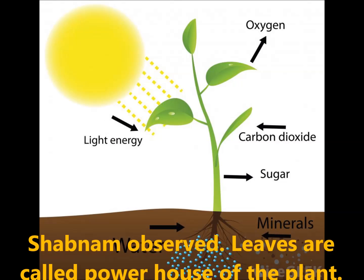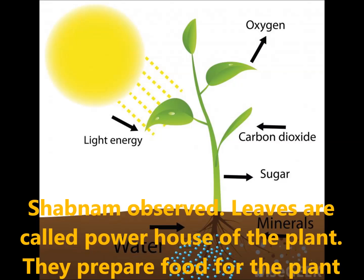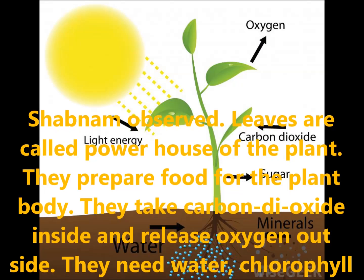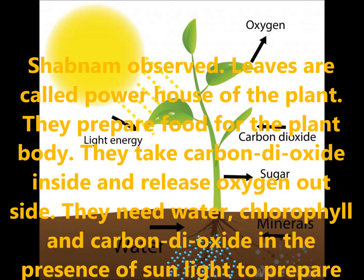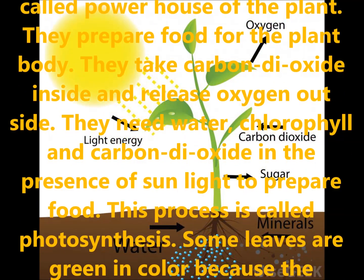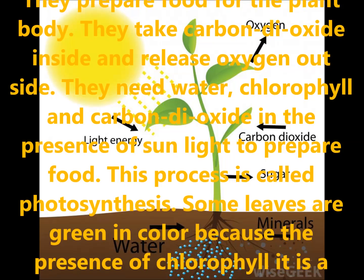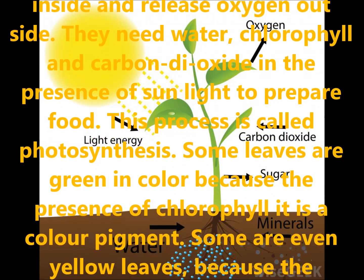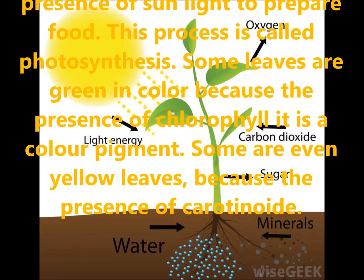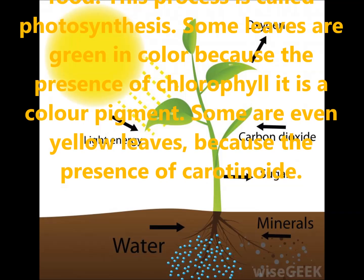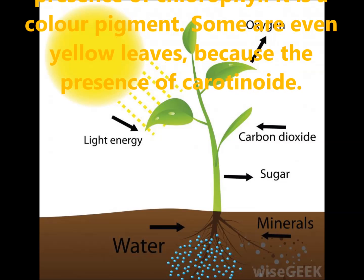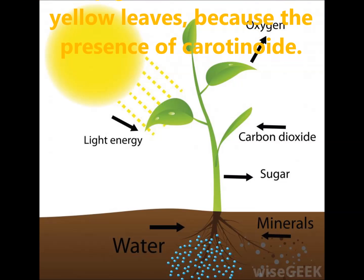Shabana observed that leaves are called the powerhouses of the plant. They prepare food for the plant body. They take in carbon dioxide and release oxygen. They need water, chlorophyll, and carbon dioxide in the presence of sunlight to prepare food. This process is called photosynthesis. Some leaves are green because of the presence of chlorophyll, which is a color pigment. Some leaves are yellow because of the presence of carotenoid, which is also a type of color pigment.